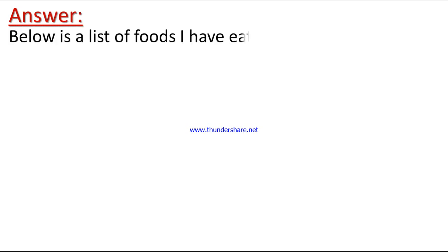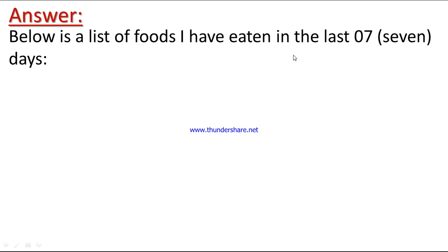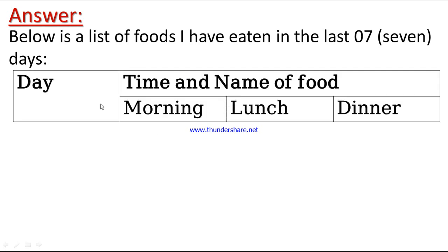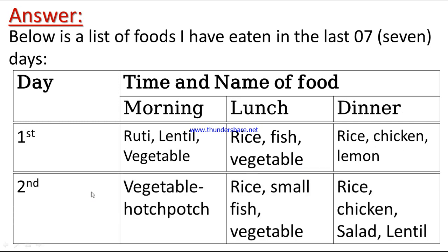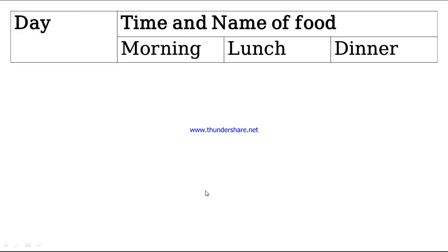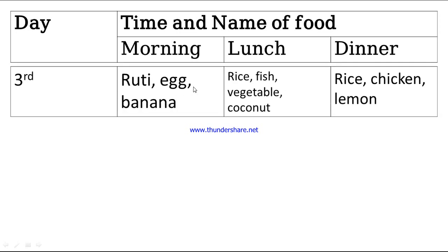Below is a list of foods I have eaten in the last seven days. First day: morning — roti, lentil, vegetable; lunch — rice, fish, vegetable; dinner — rice, chicken, vegetable, salad, lentil. Second day follows a similar pattern.